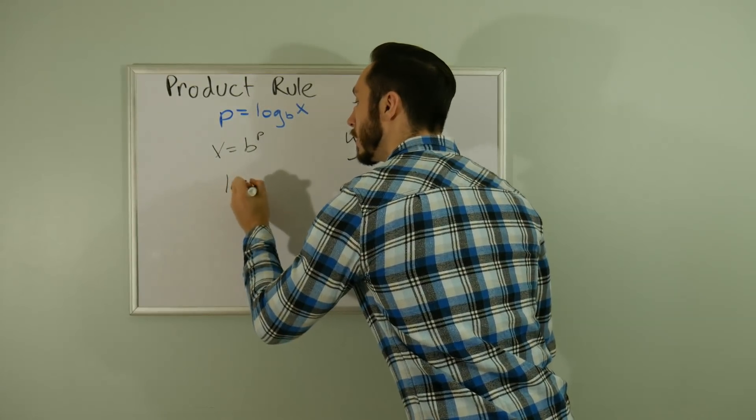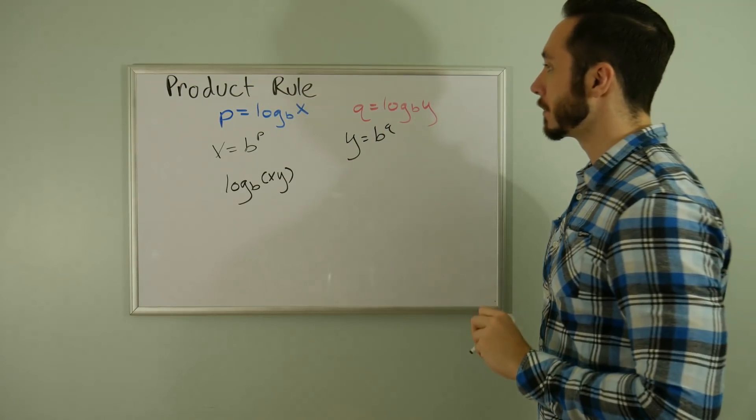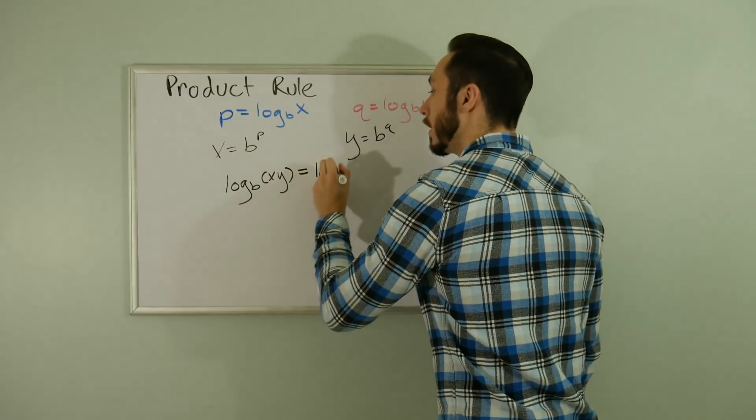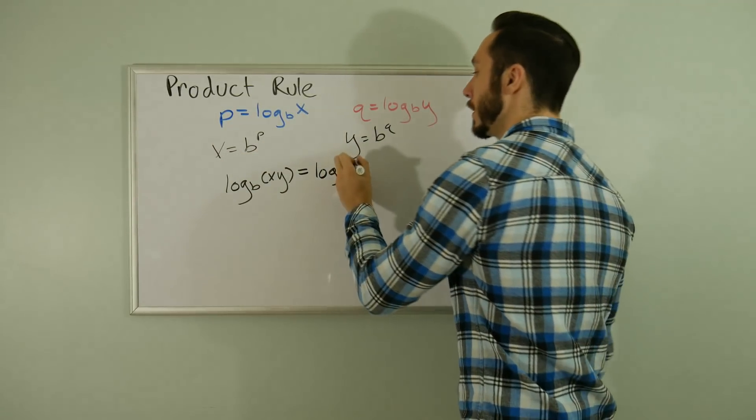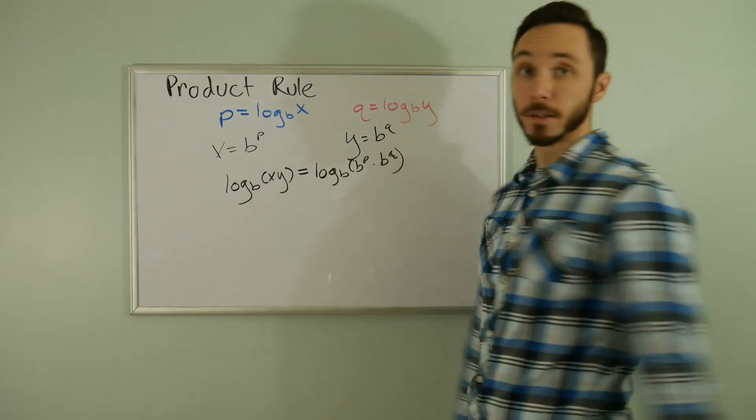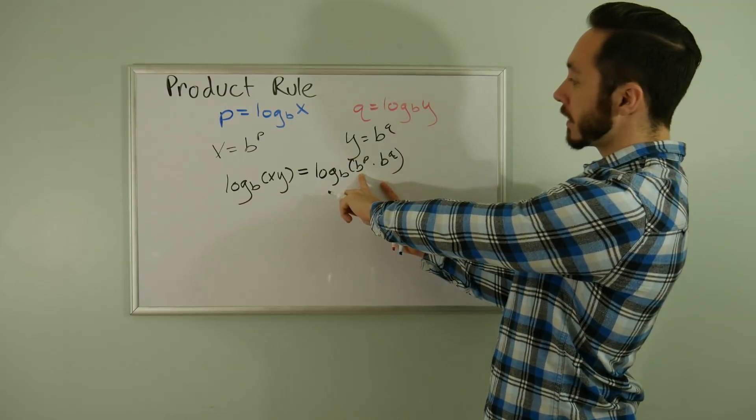Ultimately I want to take the log of the product. So log base B of XY equals... I know what X and Y equal: B to the power of P and B to the power of Q.